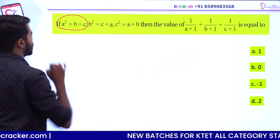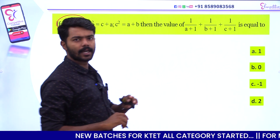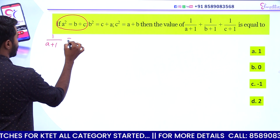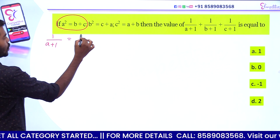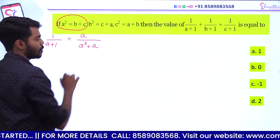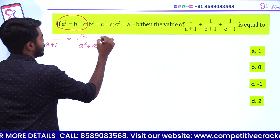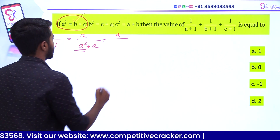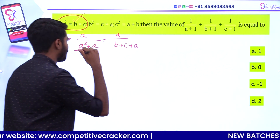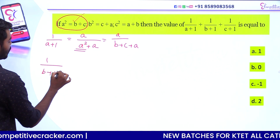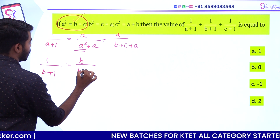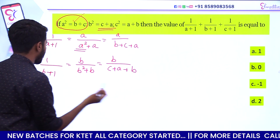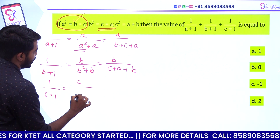We have a² equal to b plus c. So, 1 by a plus 1: multiply top and bottom by a, giving a by a² plus a, which equals a by a square plus a. Since a² equals b plus c, we get 1 by b plus 1 equals b by b² plus b equals b by c plus a plus b. Similarly, 1 by c plus 1 equals c by a plus b plus c.